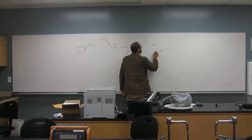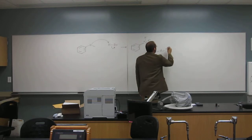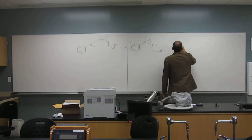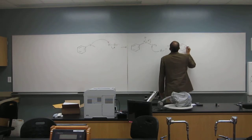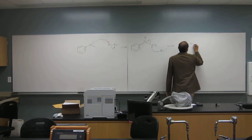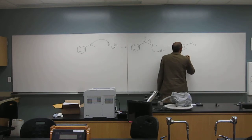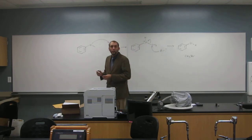So, since the SN2 happens at an SP3 hybridized carbon, you're going to get two organic products from this. So, phenol and bromomethane.